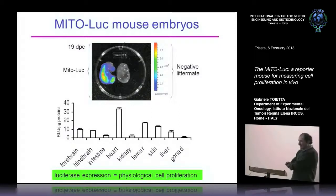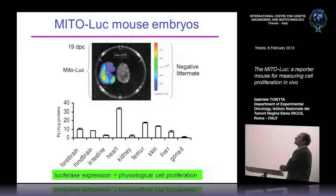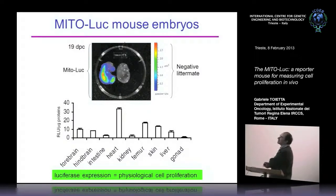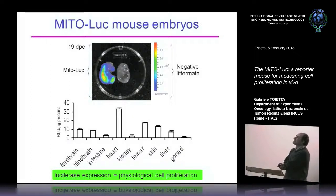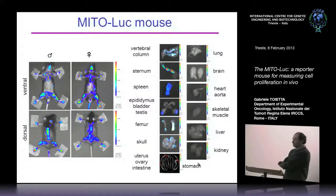We generated the mouse. This is an image of a mouse embryo at 19 days. On the left you can see the positive animal — the METOLUK — and here are negative littermates. On the bottom you can see the relative luciferase activity in homogenates of different tissues. At this stage there is high expression in the developing heart and in the bone marrow, visible in the femur.